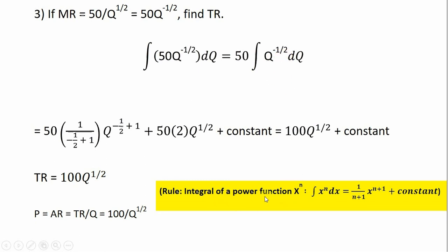We're going to use the integral of the power function rule. In this case, N is minus one half. So we have minus one half for N, giving us N plus 1 in the denominator. We take Q and raise it to N plus 1, where N is minus one half plus 1. Simplifying: 1 divided by one half is just 2, and minus one half plus 1 leaves us with one half in the power. So simplifying, we get total revenue of 100 times the square root of Q plus a constant. When Q is 0, total revenue is 0, so the constant is 0.